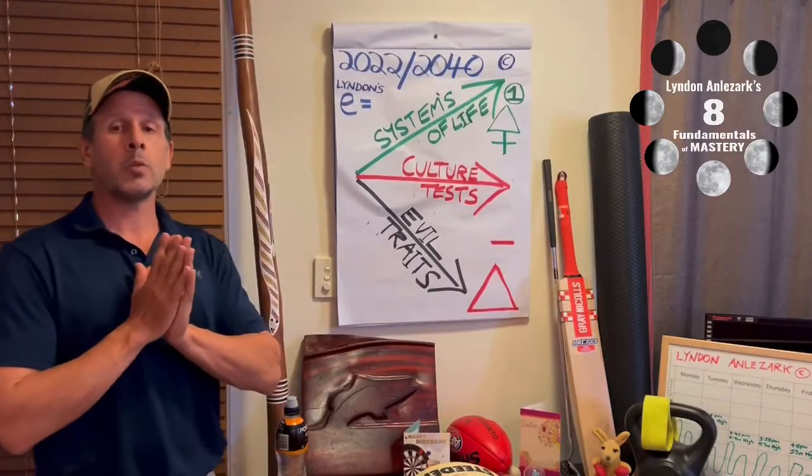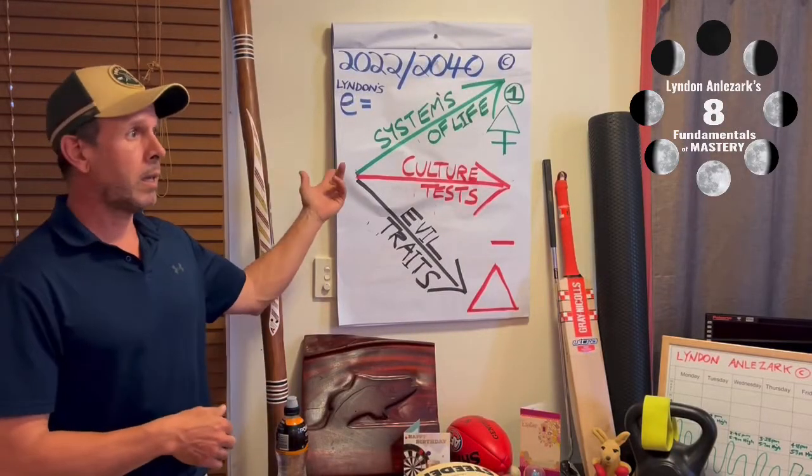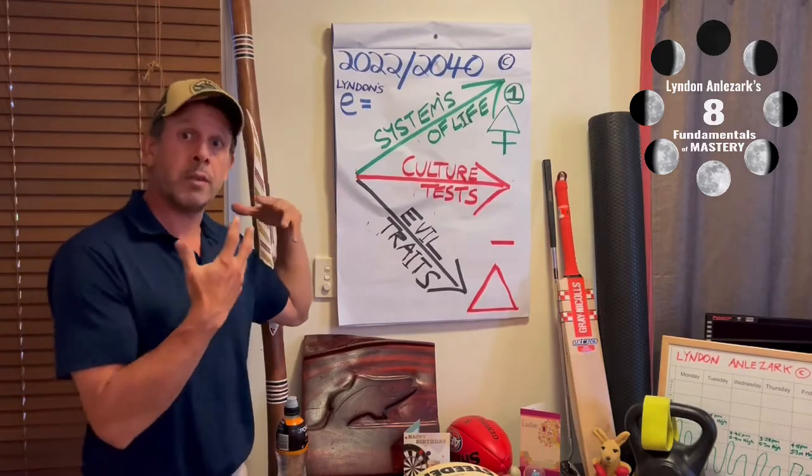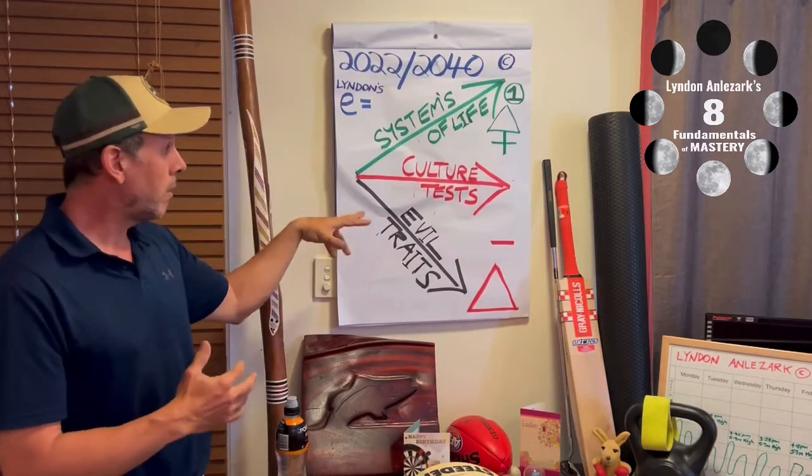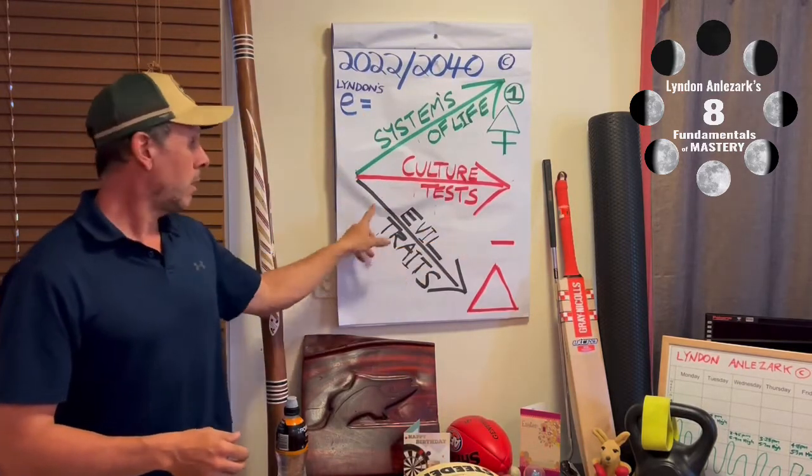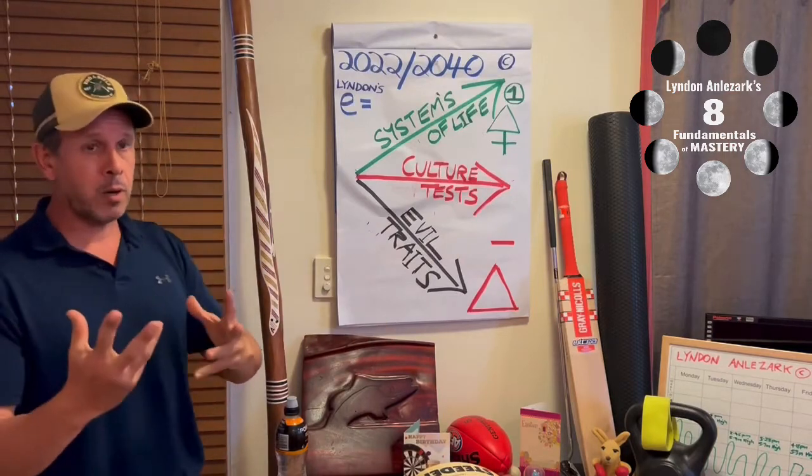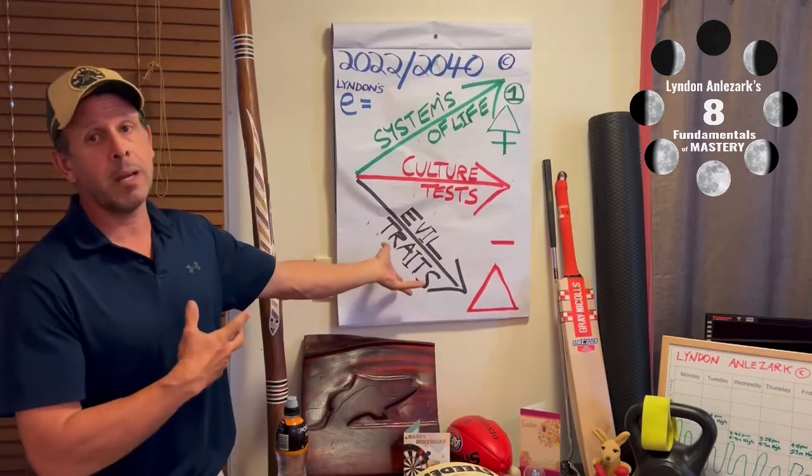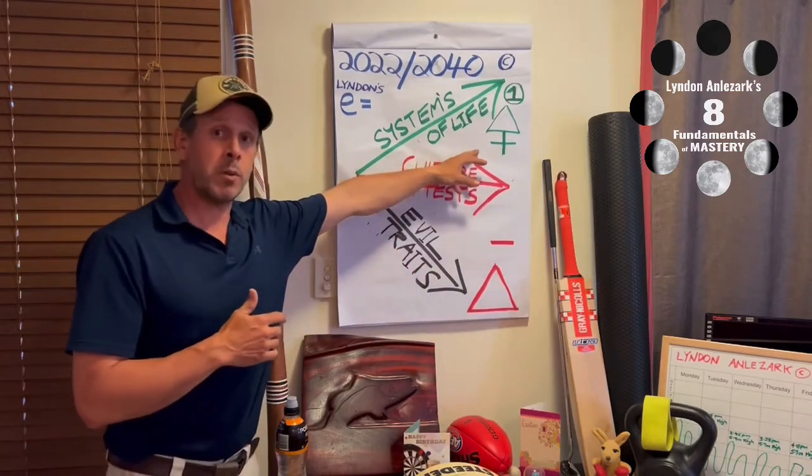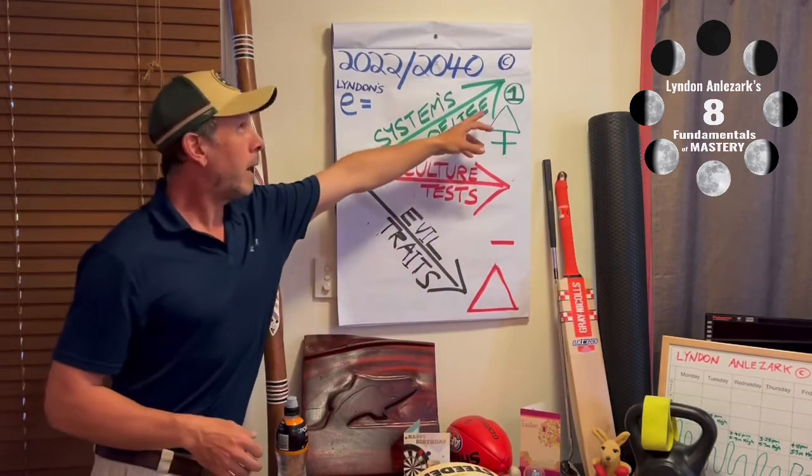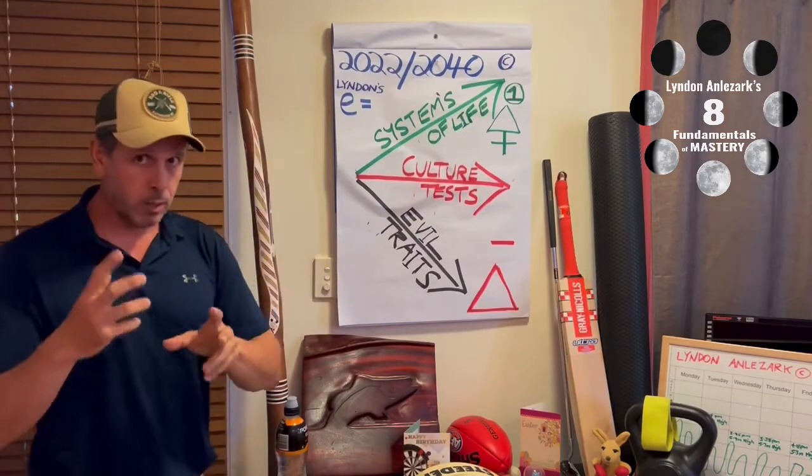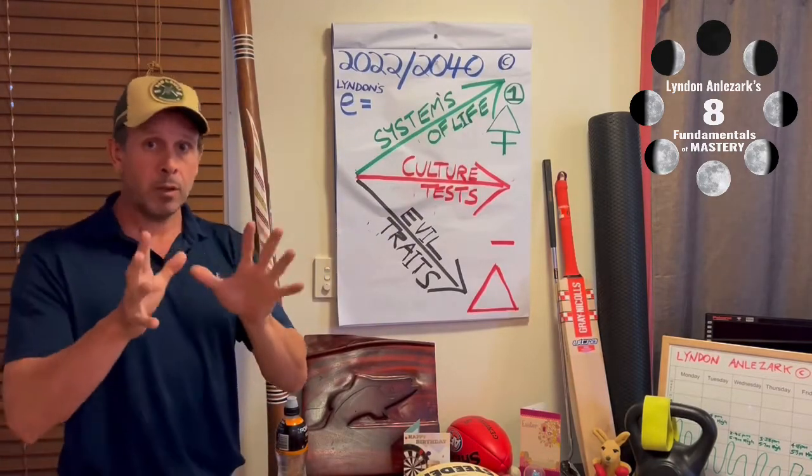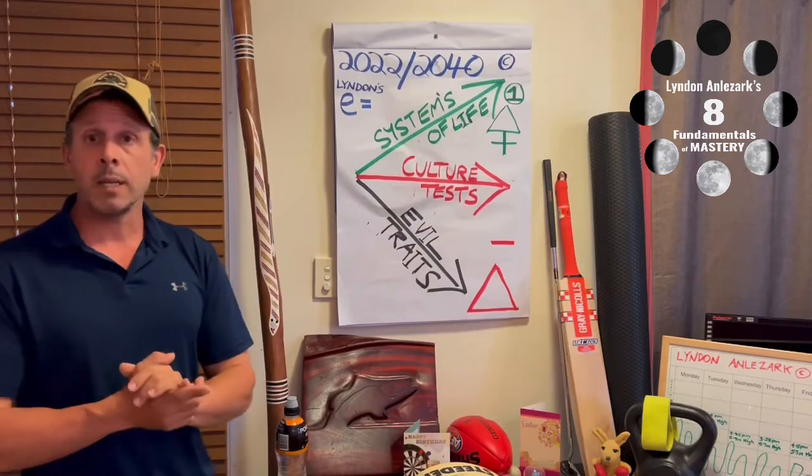Welcome to Lyndon's 2022-2040. E equals everything. I'm going to cover the systems of life, the six systems of life, the culture tests, and the evil traits. I've added a pyramid today. That's a negative pyramid, negative health, chaos down here. And that's a positive pyramid. I've even dared to put the number one up there to give you the most unbelievable gift early in your life.